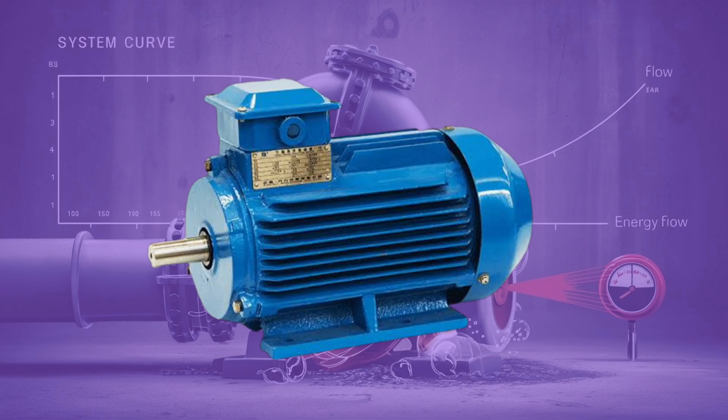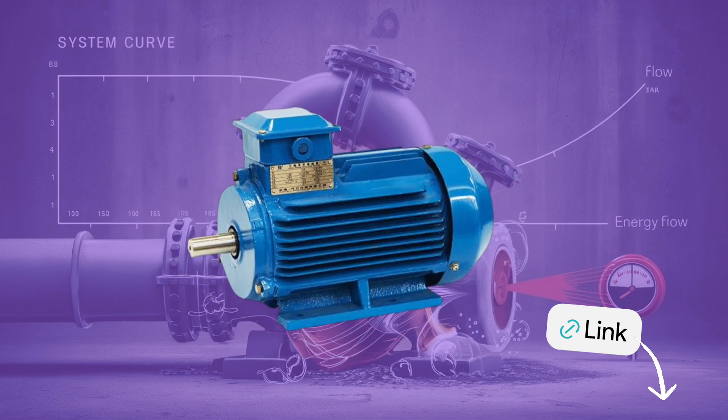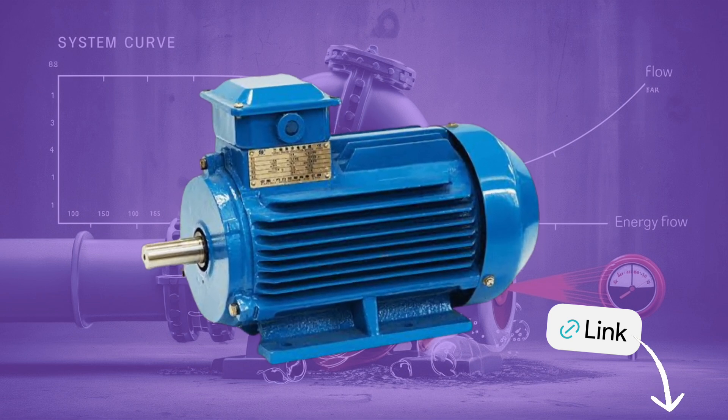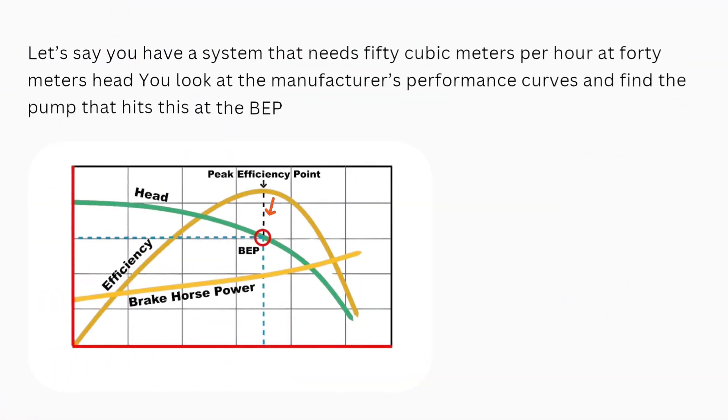If you want to deep dive into centrifugal pump videos, you must check out our centrifugal pump playlist. Real life example. Let's say you have a system that needs 50 cubic meters per hour at 40 meters head. You look at the manufacturer's performance curves and find the pump that hits this at the BEP. That's your best choice. Efficient, stable, and reliable.